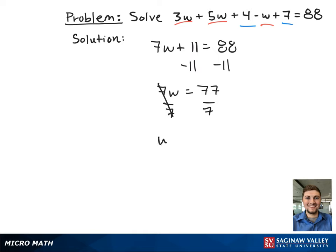That cancels out the left hand side and leaves us with w equals 77 over 7, which is w equals 11, and that is our final answer.